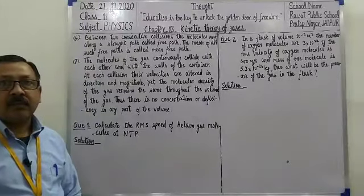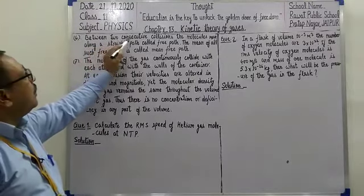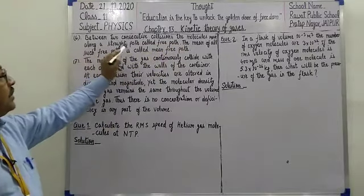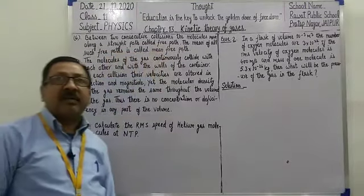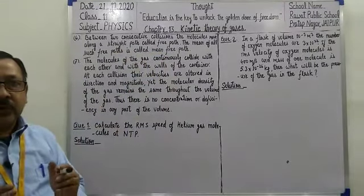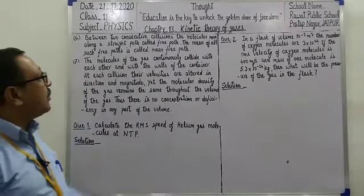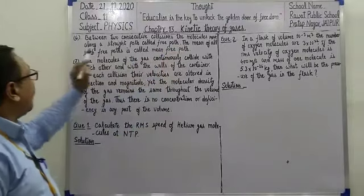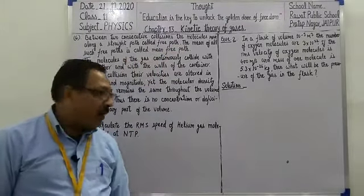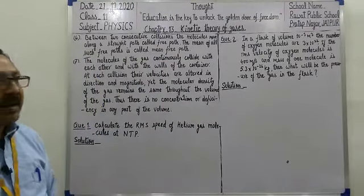Number six: between two consecutive collisions, the molecules move along a straight path called free path. جیسا پہلے بتایا کہ دو collisions کے درمیان کا جو path ہوتا ہے molecules کا، وہ ایک straight path ہوتا ہے جسے ہم free path کہتے ہیں۔ The mean of all such free paths is called mean free path — یعنی سبھی free paths کا جو mean ہوگا وہ mean free path کہلاتا ہے۔